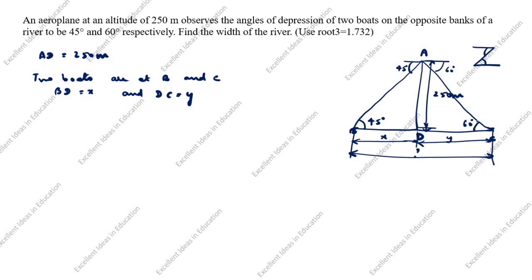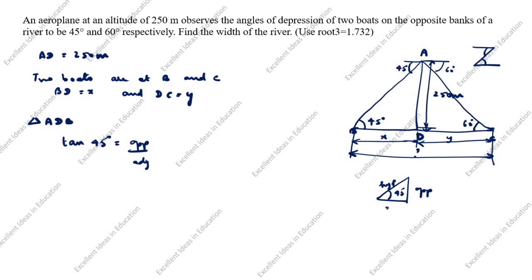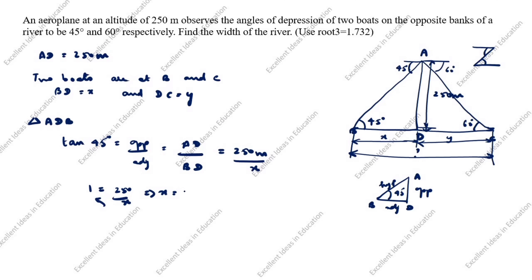Now we will solve the first triangle, triangle ADB. Tan 45 degrees equals opposite over adjacent. The opposite side is AD and the adjacent side is BD. So tan 45 = AD / BD = 250 / x. Since tan 45 = 1, we get 1 = 250 / x, therefore x = 250.